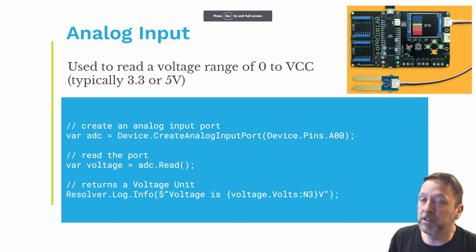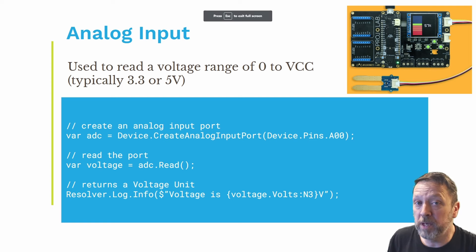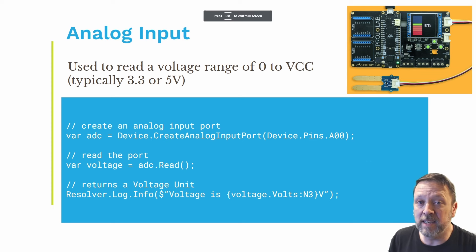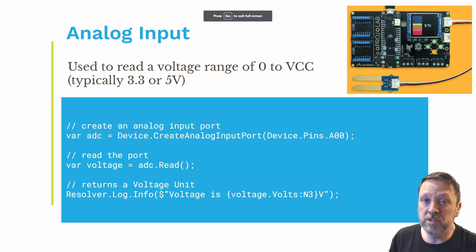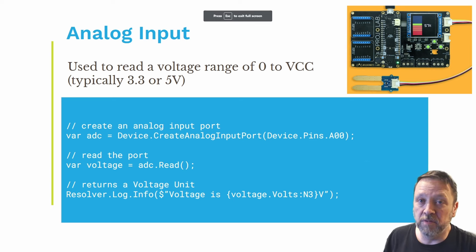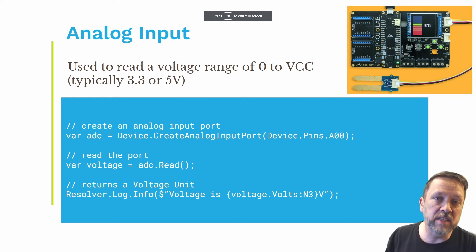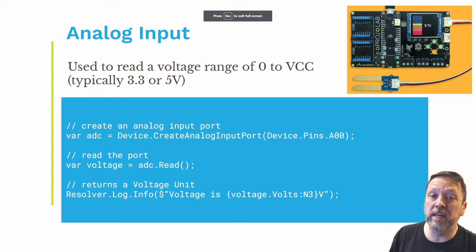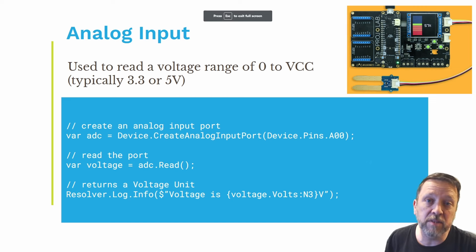Analog inputs are used to read that voltage range. You create an analog input port, telling it which pin you want to use, and then you read that voltage. One important thing to mention is that it comes back not as some float or double number, but as a voltage unit struct. Almost all of our sensors in Meadow Foundation use units so that you don't have confusion about what type of number that is — is it Fahrenheit, is it Celsius? It is very definitive on what the value is, and it also provides conversions for you so you don't have to do that math in your own code.